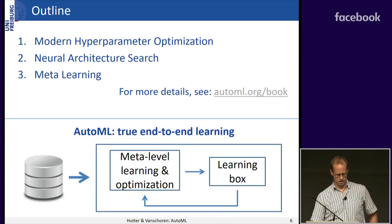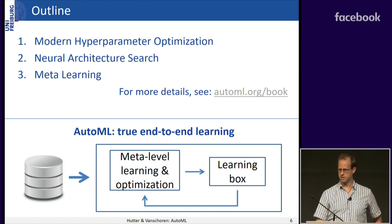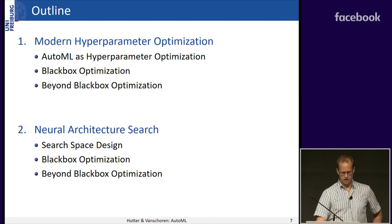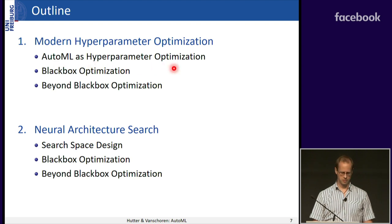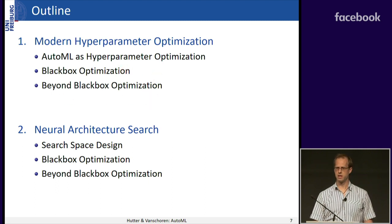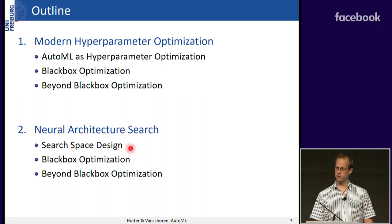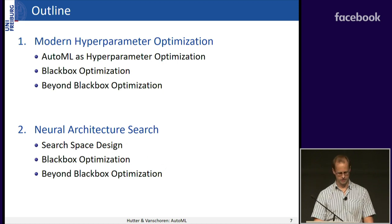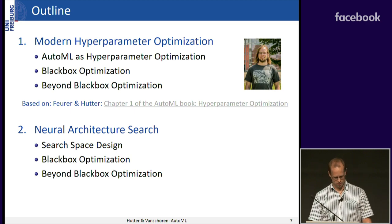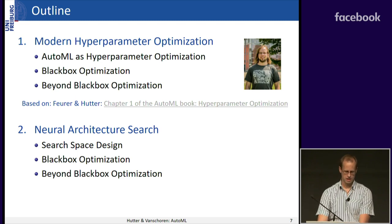All of these are based on a book that we edited — specifically the first three chapters, which are review articles on these three different fields. My part covers: first, framing AutoML as a hyperparameter optimization problem; then black-box optimization methods; then going beyond black-box optimization for efficiency. For neural architecture search, the overview mirrors that structure. The first part is based on a review article I wrote together with my PhD student Matthias Feurer.